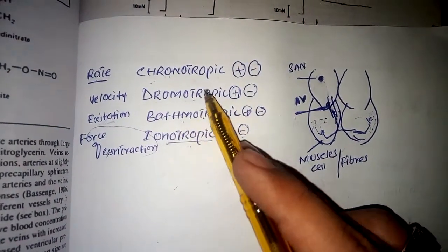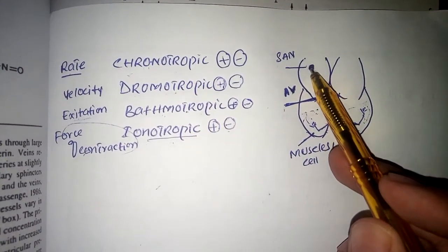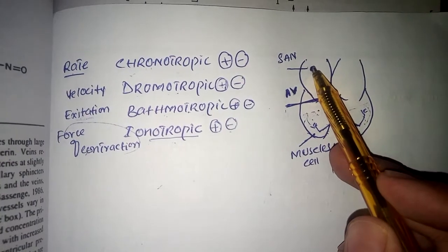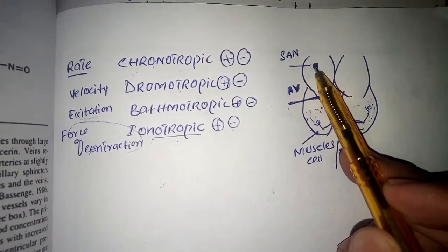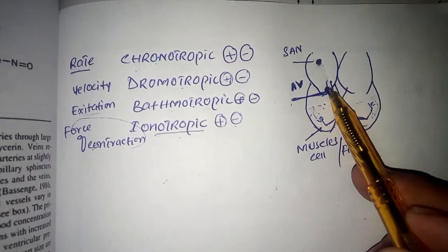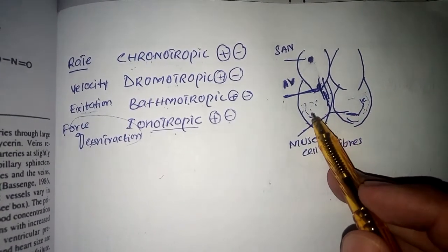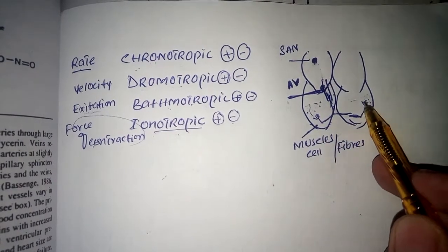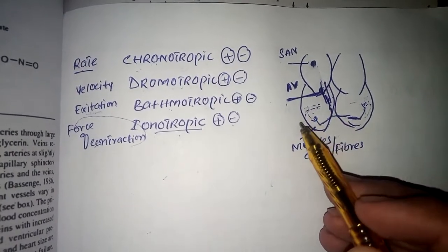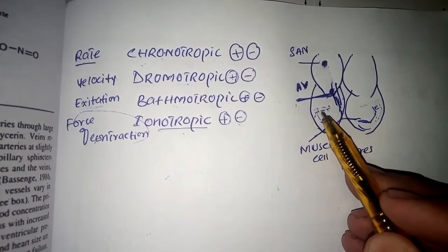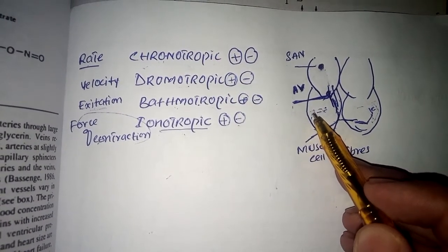Chronotropic, dromotropic, bathmotropic, and inotropic — in order to understand these terms we must know how the signal is generated and forwarded towards the muscle fibers. The sinoatrial node generates the impulse, which is sent towards the AV node by means of the bundle of His, then through the right and left bundles, then the Purkinje fibers. These Purkinje fibers forward the impulse to the muscle fibers, which upon receiving the impulse become excited and then perform contraction.